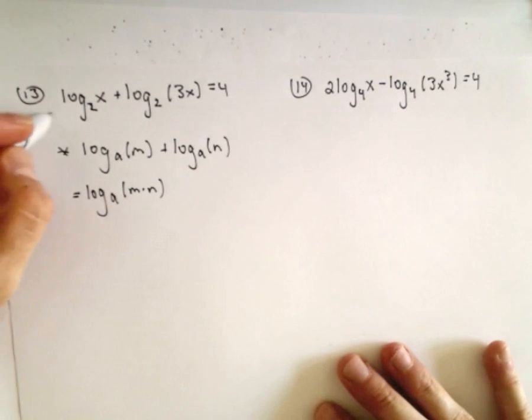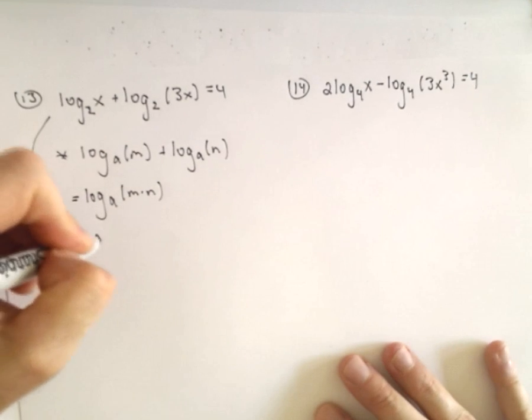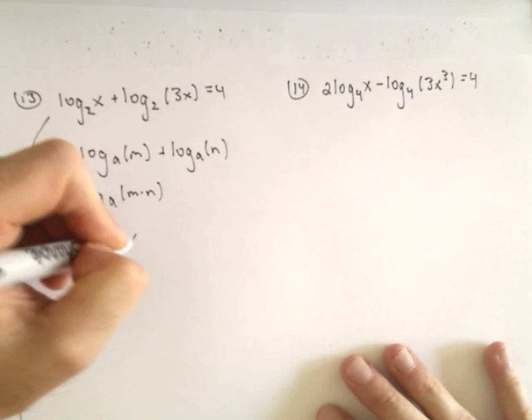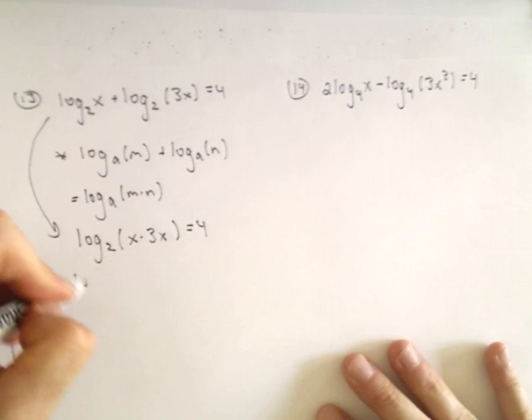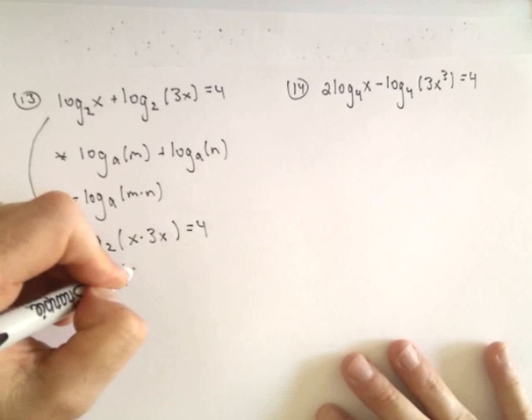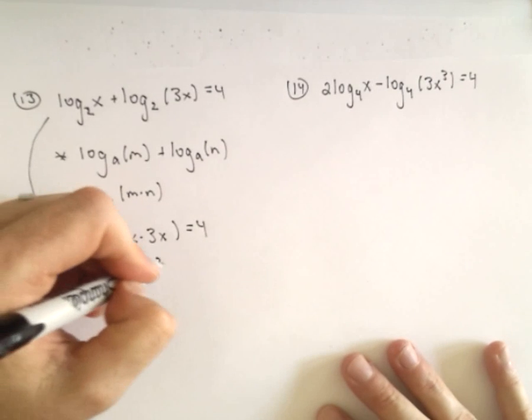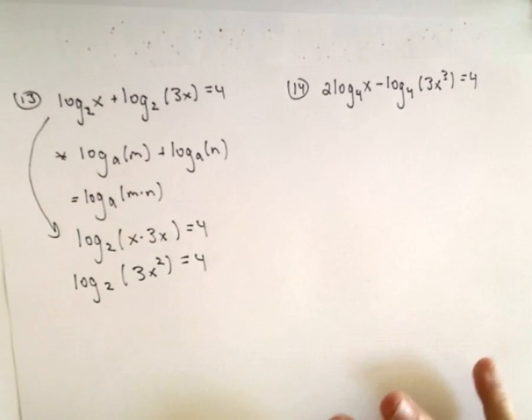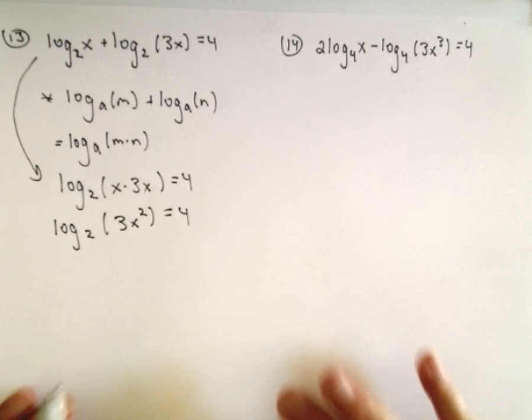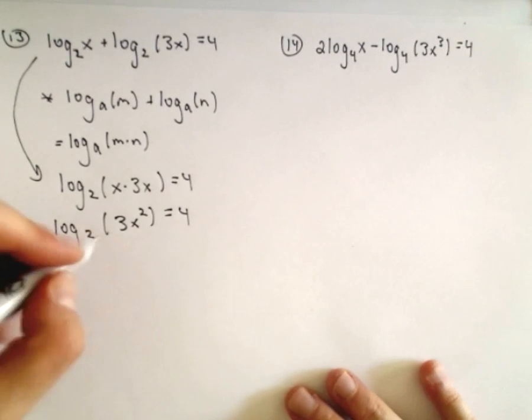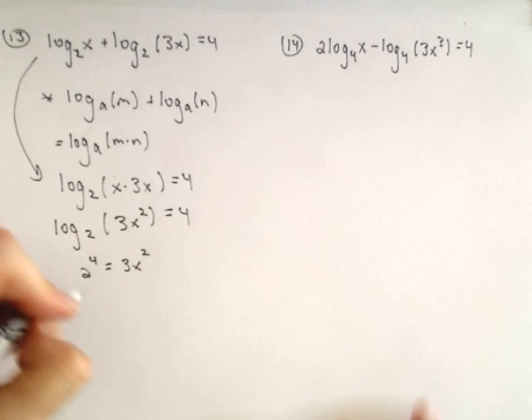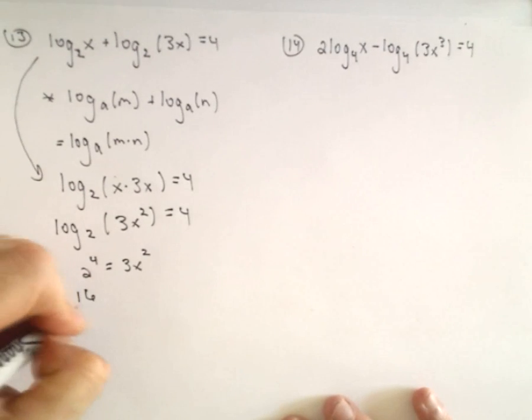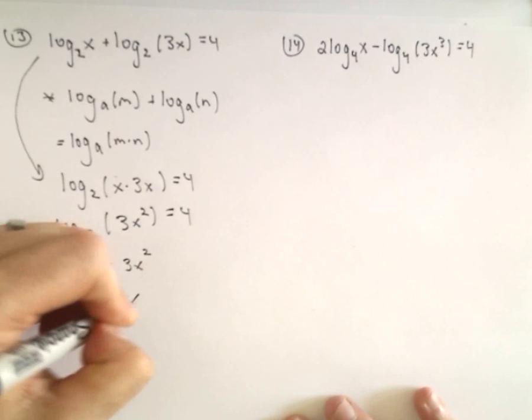So I'm going to use that property and rewrite this as log base 2 of x times 3x. If we simplify, that's just going to give us log base 2 of 3x squared. We can rewrite this using exponential notation. So 2 to the 4th equals 3x squared. 2 to the 4th is just going to give us 16. We can also divide both sides by 3.